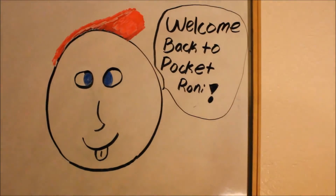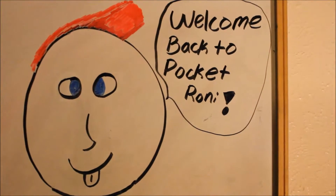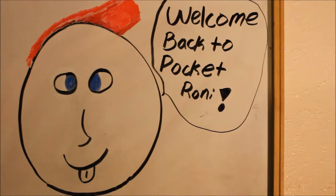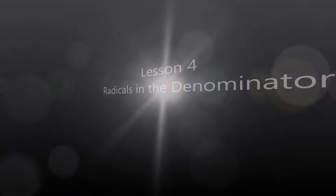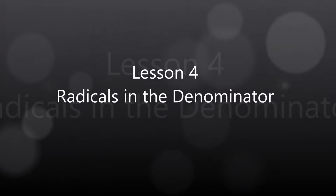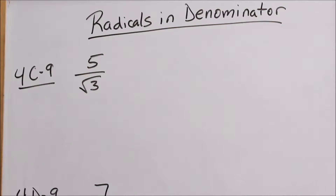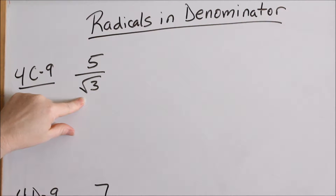Mathematics crossing your eyes? Maybe Pocket Fronnie can help you. Now we are doing radicals in the denominator. A fraction — if you look at 4c9, one of the rules of math is that you can never have a radical in the denominator.